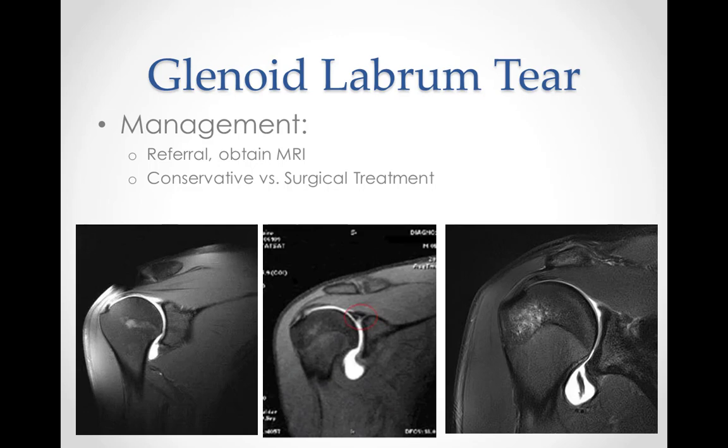Management of glenoid labrum tears includes rest and applying cold therapy to reduce pain and inflammation. NSAIDs may help with pain modulation. Unstable injuries, Bankart lesions, and SLAP lesions will require surgery to reattach the labrum to the glenoid. Following surgery, the shoulder will usually be kept in a sling for three to four weeks. After six weeks, more specific sports training can be done, although full fitness may take three to four months to return.